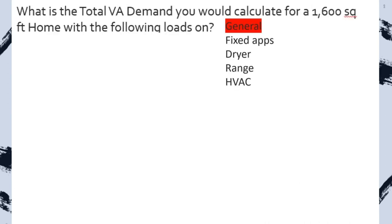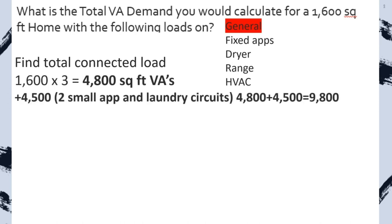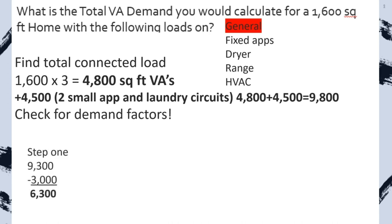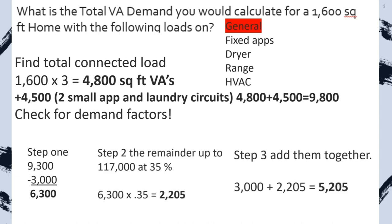Step one: find our general receptacle and lighting load. Total connected load: square feet multiplied by 3 VAs, then add 4,500 VAs for two small appliance and one laundry circuits, giving a total of 9,800. Check demand factors: take the first 3,000 at 100%, set it aside; multiply the remaining 6,800 by 0.35; add them back together for a new total reduced load of 5,205. Write that to our larger calculation.